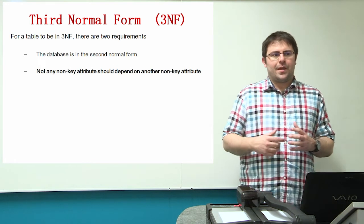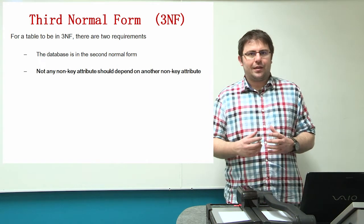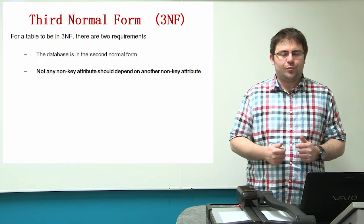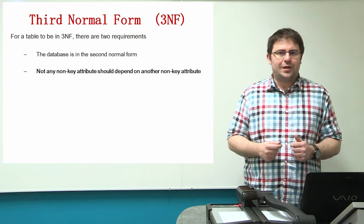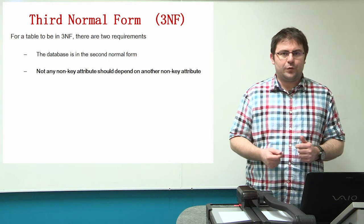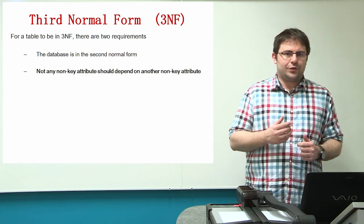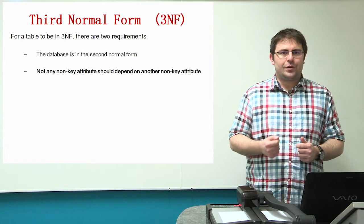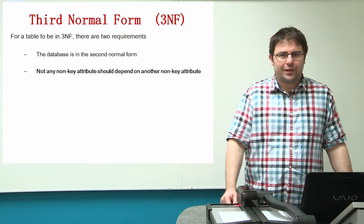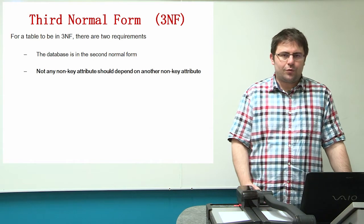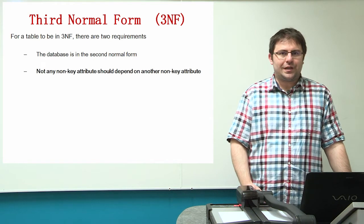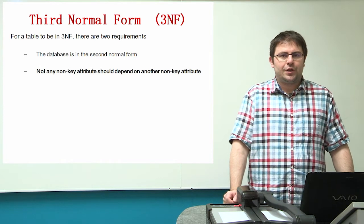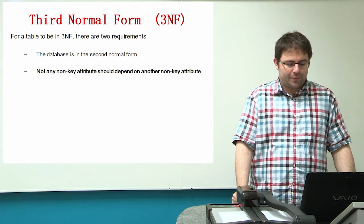Let's repeat the three important rules of normalization. The first rule is to separate duplicate data from repeating attributes. The second rule, to go from the first to the second normal form, is to check whether non-key attributes depend on every part of the key. And when moving from the second to the third normal form, we need to check whether non-key attributes depend on another non-key attribute.